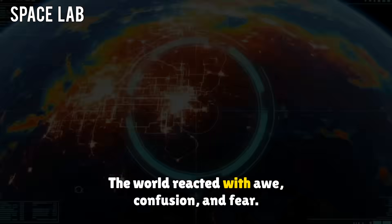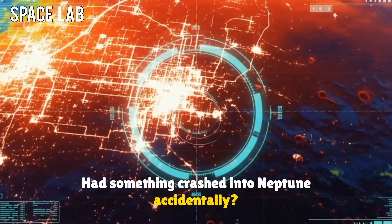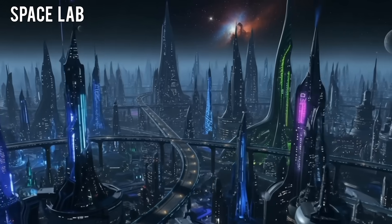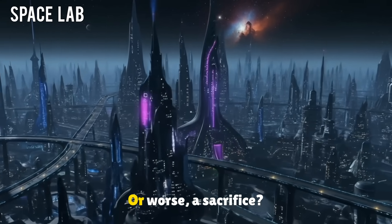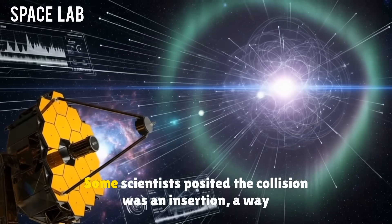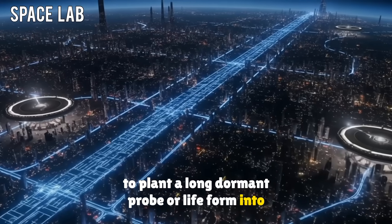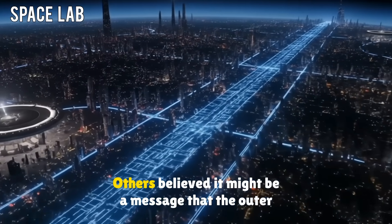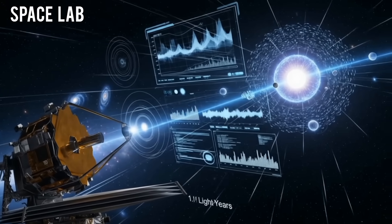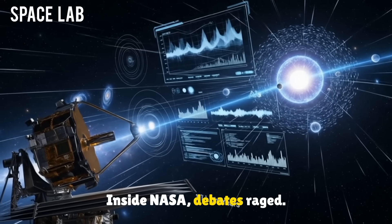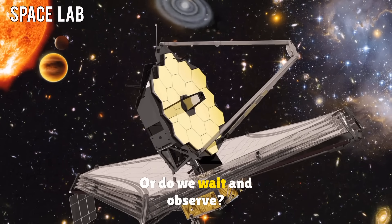The world reacted with awe, confusion, and fear. Had something crashed into Neptune accidentally? Or was it all part of a plan? Was Neptune chosen as a test? A hiding place? Or worse, a sacrifice? Some scientists posited the collision was an insertion, a way to plant a long dormant probe or life form into Neptune's atmosphere. Others believed it might be a message, that the outer solar system was no longer under our control. Inside NASA, debates raged. Do we attempt contact again? Do we prepare defenses? Or do we wait and observe?